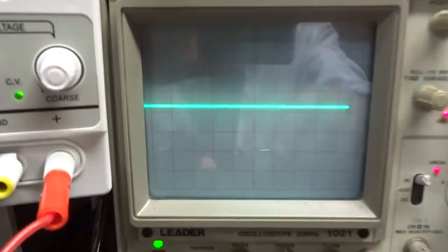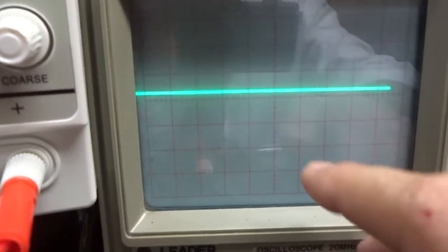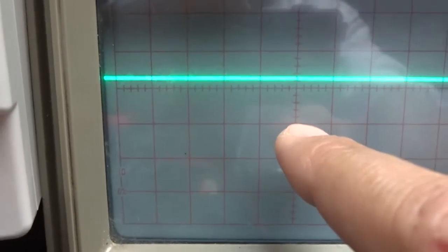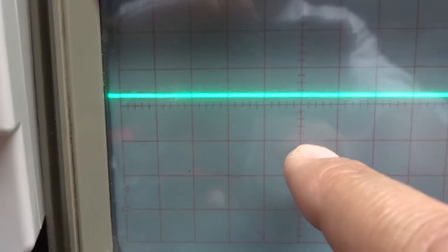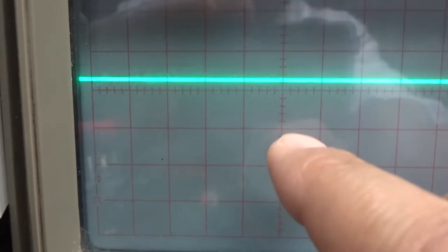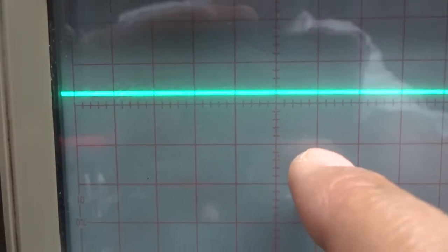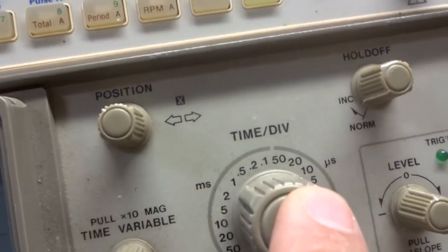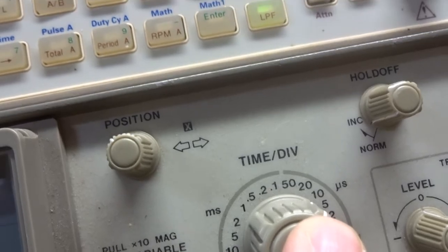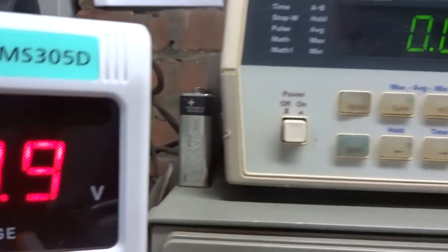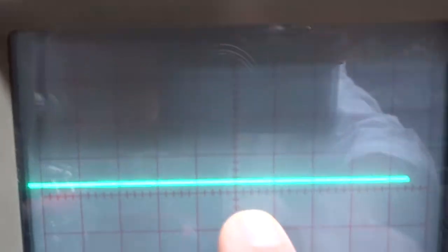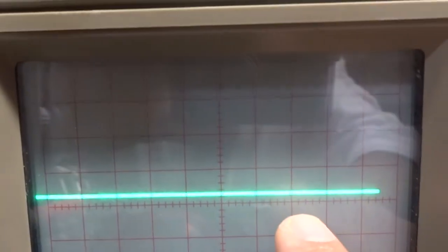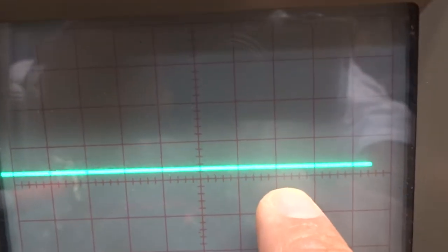One thing about your scope, if you notice, is it has a graph on it. Each centimeter graph is equal to the time. In this case, 20 microseconds. If you take 20 microseconds and you have a waveform on your scope, each centimeter is 20 microseconds.